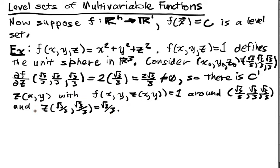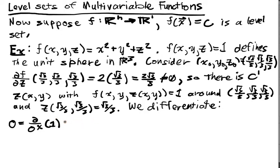Well, now we want to figure out what's the tangent to this guy, to the sphere at that point. So we differentiate this implicit equation. And we have that 0 is the partial with respect to x of the constant 1, which